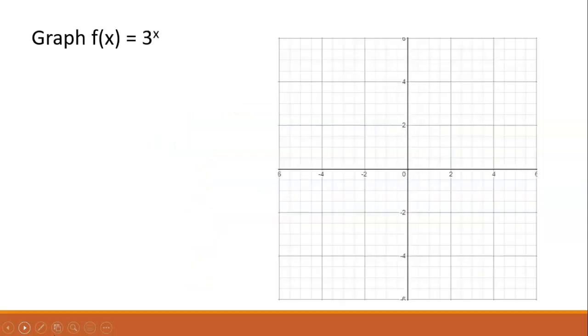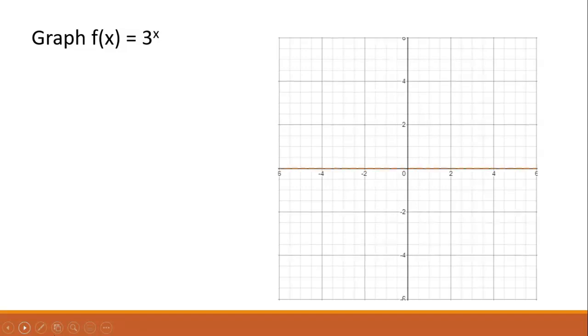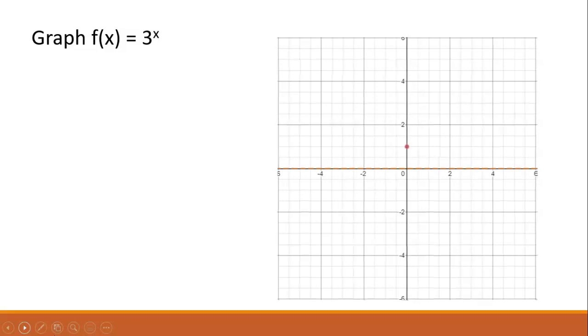Let's look at an example of the graph. Graph f(x) equals 3 to the x. Remember that the exponential graph has an asymptote on the x-axis. Its pivot point is on the y-axis and is c-spaces above the asymptote.